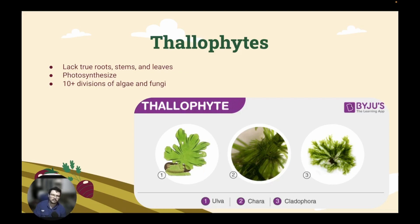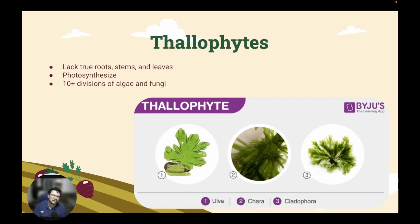Our first group in plant taxonomy is the thallophytes. The thallophytes lack true roots, stems, and leaves, but they do still photosynthesize. There are approximately 10 divisions of algae that fall into the thallophytes. These are the things closest to our green algae ancestors that would have been the first organisms to move from ocean life onto land.